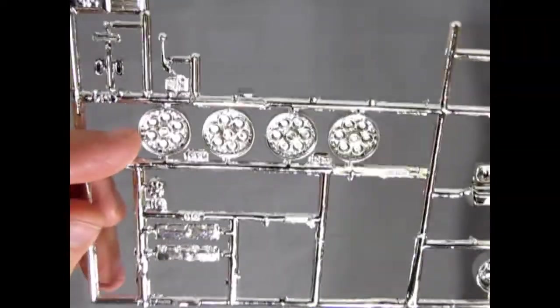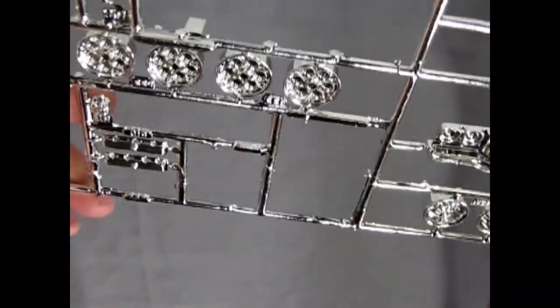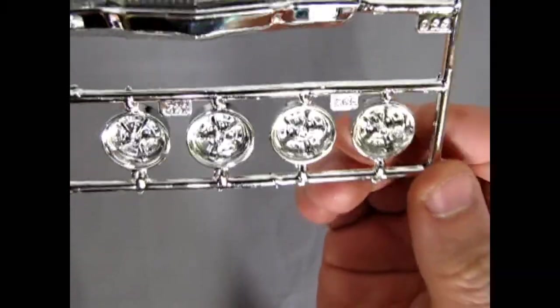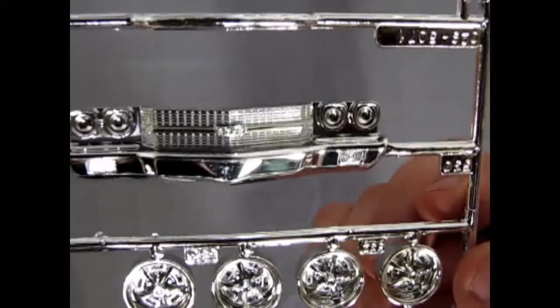You could paint those center circles flat black. Give them kind of honeycomb look. I don't know. Detail is quite nice on here. For the parts you do get.